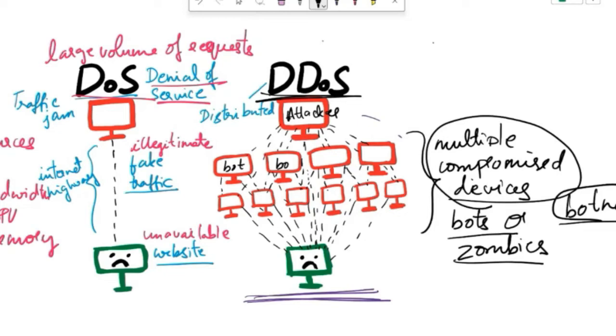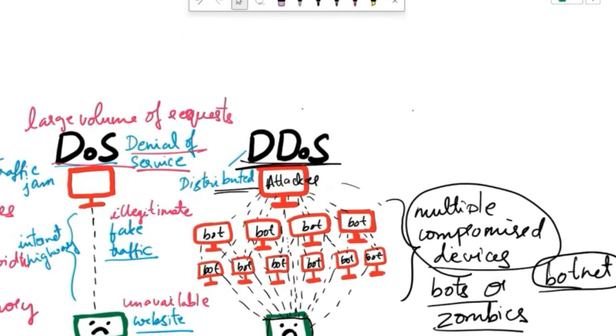This is the attacker. All these bots, all these devices are under the control of this attacker, so they are called bots or zombies. All of these bots form a network called botnet. DDoS attacks are more powerful and difficult to mitigate than traditional DoS attacks because they originate from multiple sources. This makes it challenging to distinguish legitimate traffic from malicious traffic.